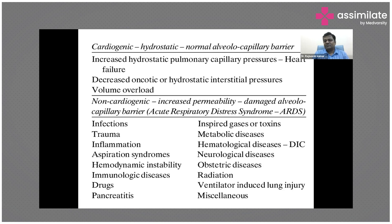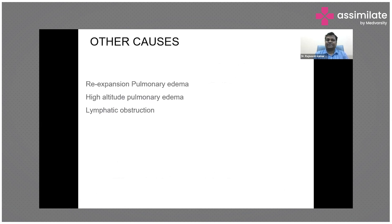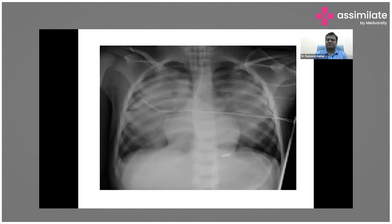Patients on mechanical ventilation with high tidal volume can have ventilator-induced lung injury. So the two main mechanisms are cardiogenic and non-cardiogenic. Cardiogenic is based on differential pressures; non-cardiogenic is mainly based on increased pulmonary vascular permeability. Other causes include re-expansion pulmonary edema, high altitude pulmonary edema, and lymphatic obstruction.